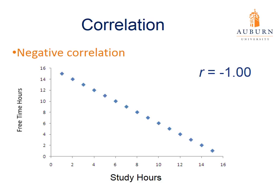Here is an example of a perfect negative correlation of negative 1 — the coefficient can't get any lower. Remember, a correlation of negative 1 is just as strong as a correlation of 1, so our two examples have equal strength. In this example, we have study hours on the x-axis and free time hours on the y-axis. These two variables are negatively related: the more hours you spend studying, the fewer free time hours you have. As one variable increases, the other decreases — that's a negative correlation.